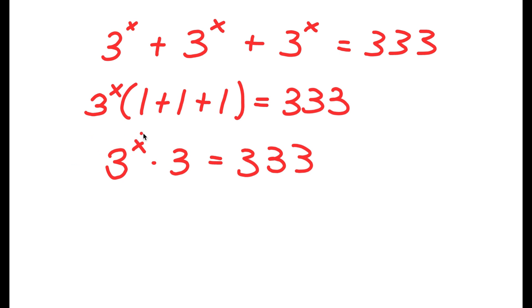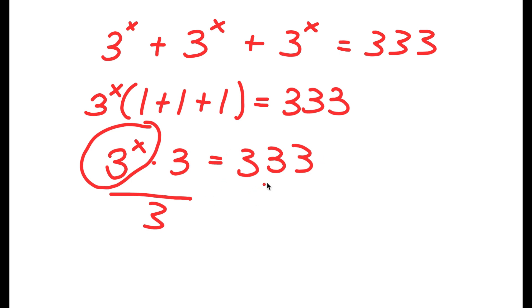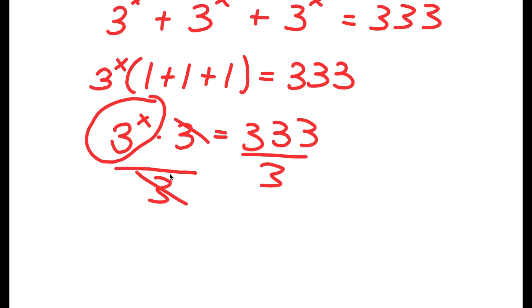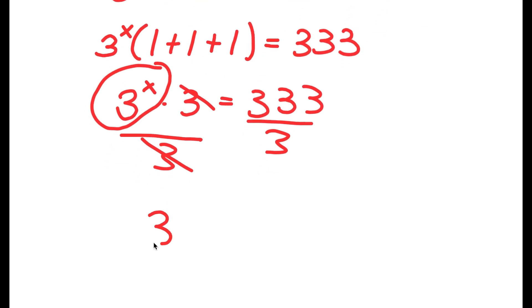Now we want to isolate 3 to the power of x. The way to do that is to get rid of the times 3 by dividing both sides by 3. So now I get 3 to the power of x is equal to 111.